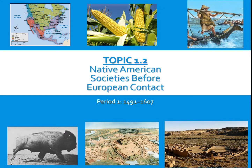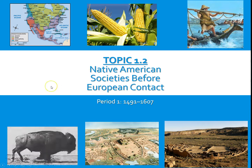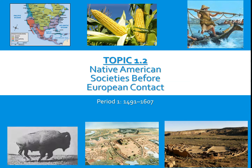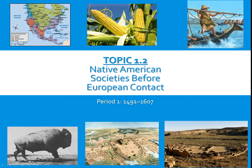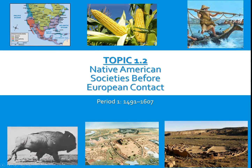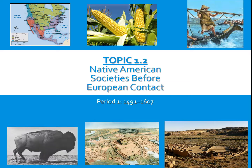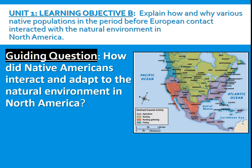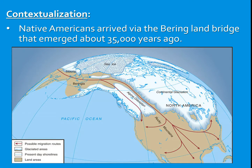Welcome. We're going to begin our look at the APUSH curriculum with topic 1.2. Period 1 is all about the interaction between Native Americans and the earliest European settlers, but before we get to European settlers, we need to look at North America and how Native Americans existed prior to Europeans arriving. We'll go region by region and figure out how Native Americans adapted to their local environments. Our guiding question is: how did Native Americans interact and adapt to the natural environment in North America?